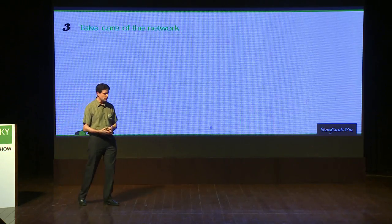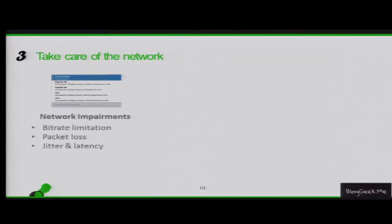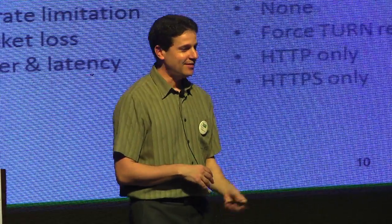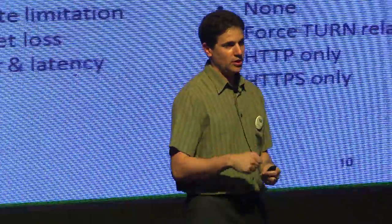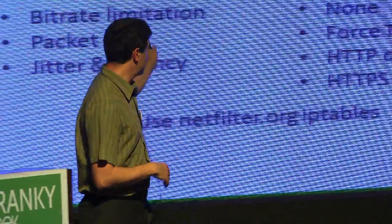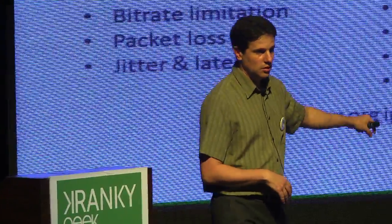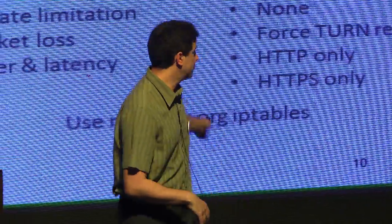The third thing is you need to take care of the network. Things don't work when you move home, and the next problem is what happens under packet loss, latency, or other impairments — you need to automate testing those network conditions. The second aspect is firewall configurations: you need to force TURN relays, force TCP or TLS, and so on. The best way to do both is using netfilter.org IP tables — configure Linux the way you want it, and it works, though it takes a bit of hacking.